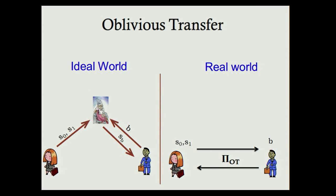To recall oblivious transfer: in the ideal world, Alice has two strings S0 and S1, Bob has a bit B, they both communicate to the ideal functionality, and Bob receives S_B. In particular, Bob has no idea about S_{1-B}, and Alice has no idea about the bit B itself. In the real world there's no ideal party, so Alice and Bob run protocol pi, and we want these two executions to be indistinguishable — not only in the standalone setting but when the same protocol is run multiple times.